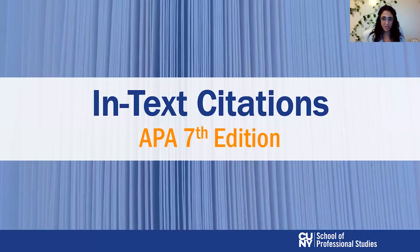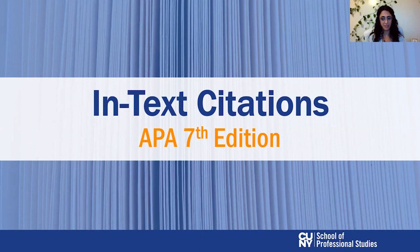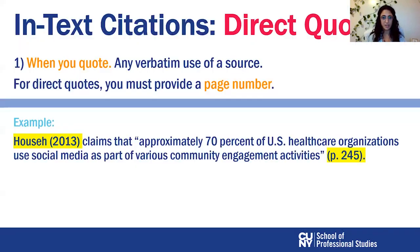We'll start by talking about how to do proper in-text citations. In-text citations means the citations that you give inside your paper in the running text, and we are going to discuss the APA 7th edition, which is the latest edition. In general, citations include the author's name and the year of publication.